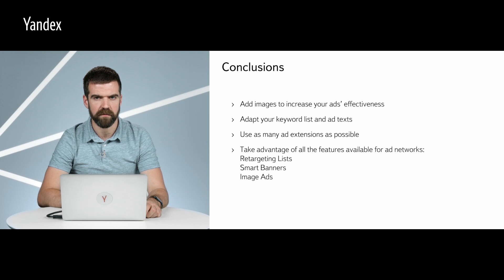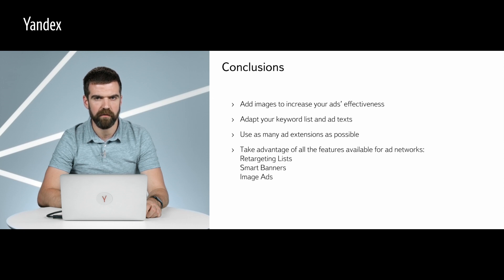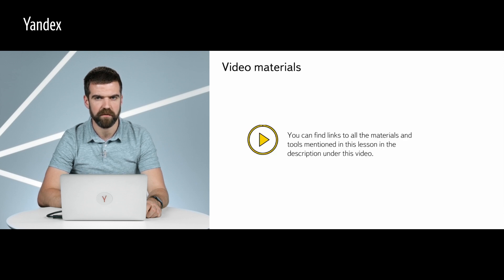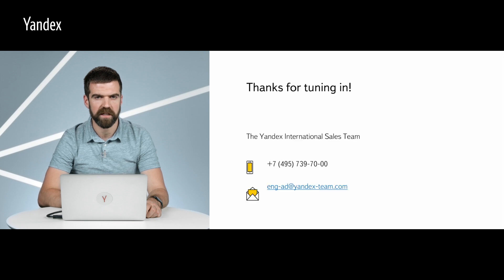And with that, we come to the end of this video lesson. In the previous video, we saw what you can achieve with campaigns for ad networks — now you know how to set up such campaigns and what additional features are available. I want to remind you just how important images are for your campaigns in ad networks. To successfully attract users' attention on YAN sites, images are a must-have. Carefully check and make changes to your ad texts and keyword list to make sure your campaigns get the maximum reach and the best results possible. We recommend using all available features in your YAN campaigns — retargeting lists, smart banners, and image ads. Thanks for taking the time to tune into this video lesson, and see you next time.